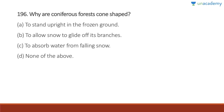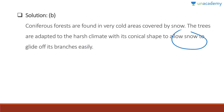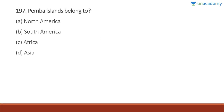Question 196: Why are coniferous forests cone-shaped? They are cone-shaped to allow snow to glide off their branches; otherwise the weight of snow would break the branches. Coniferous forests are found in very cold snow-covered areas, and the trees are adapted to the harsh climate with their conical shape.